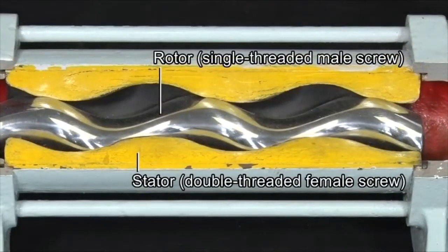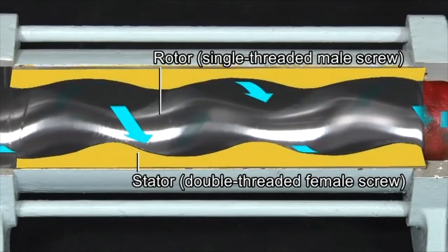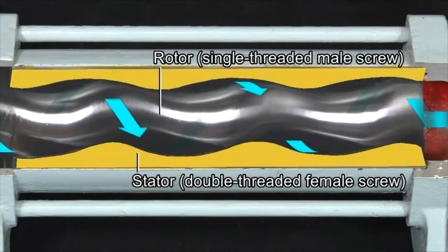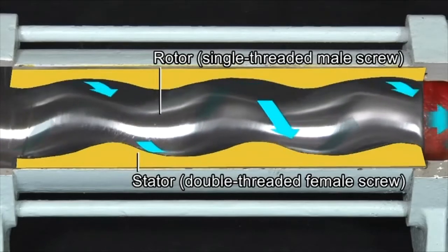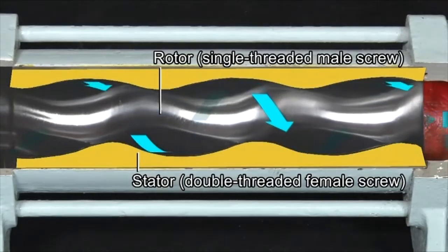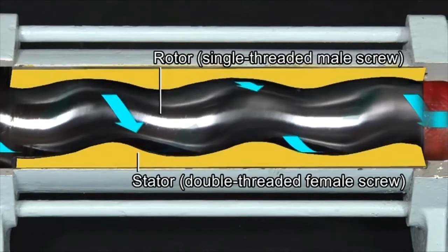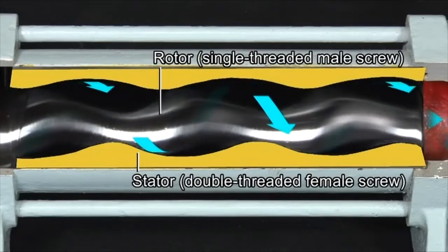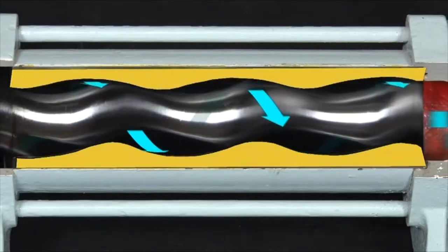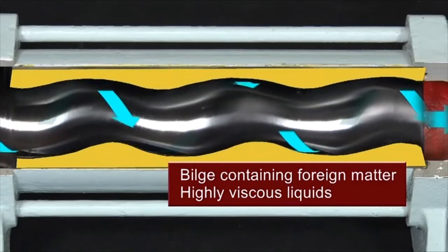The one screw pump is a kind of displacement screw pump and consists of a stator and rotor. If the rotor of a single threaded male screw is turned inside a double threaded female screw stator, the rotor turns inside the stator. The stator is made of a flexible material and the rotor continuously moves from one space to another as produced between the rotor and stator. This is how pump action occurs and its continuous movement transfers bilge containing foreign matter as well as viscous liquids.